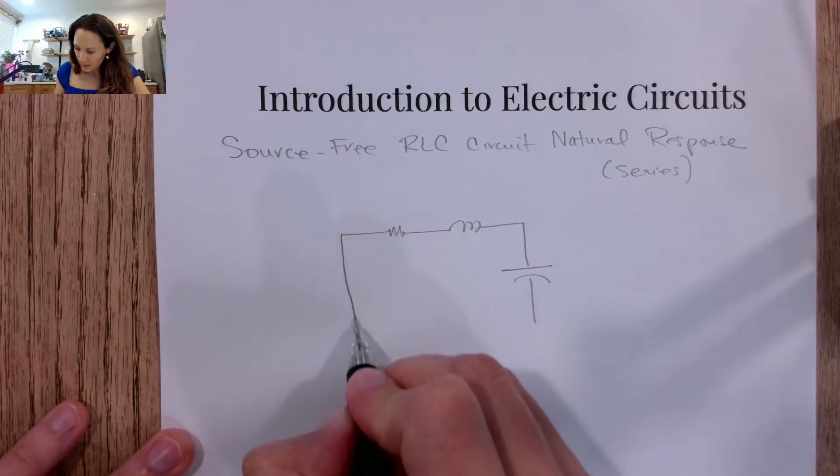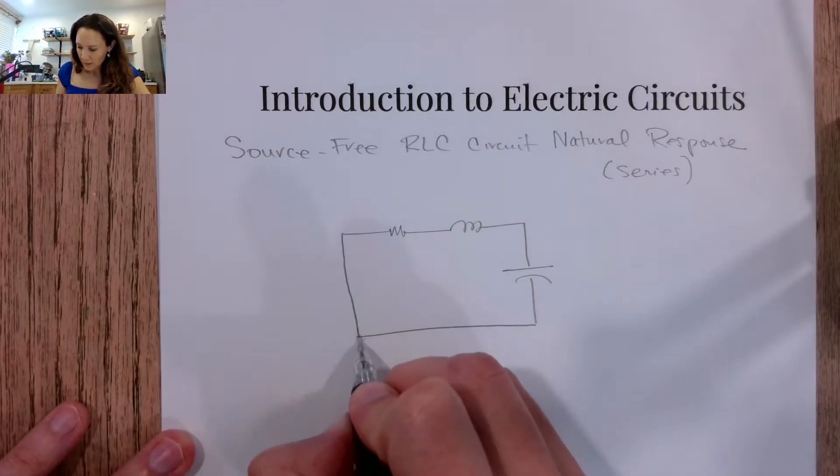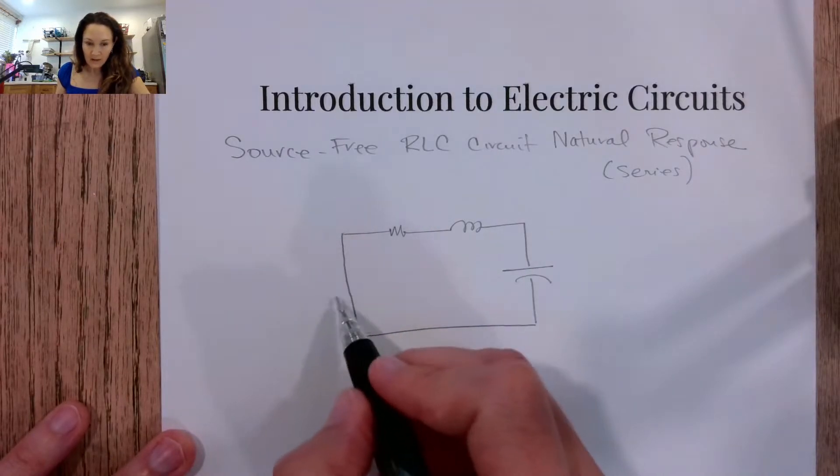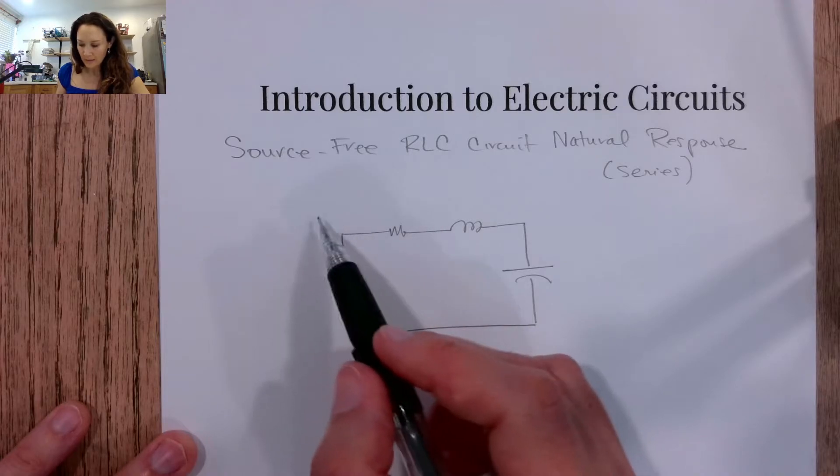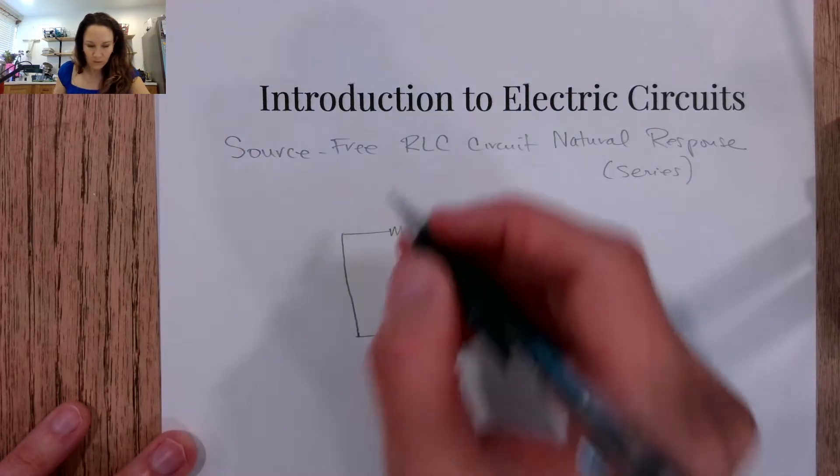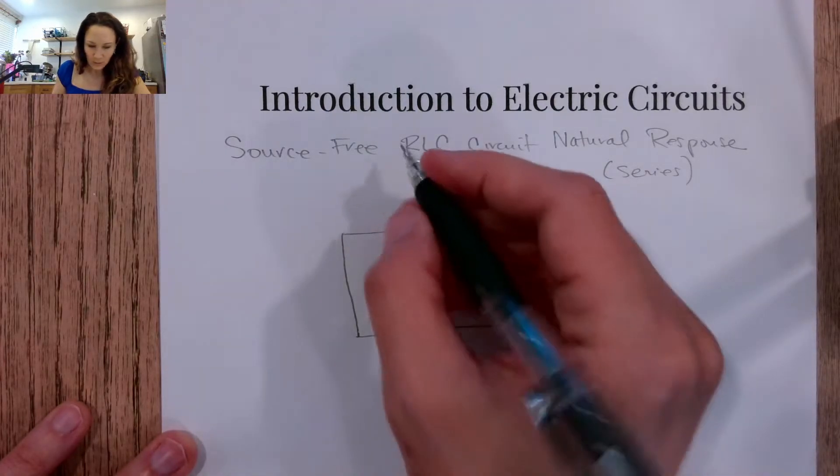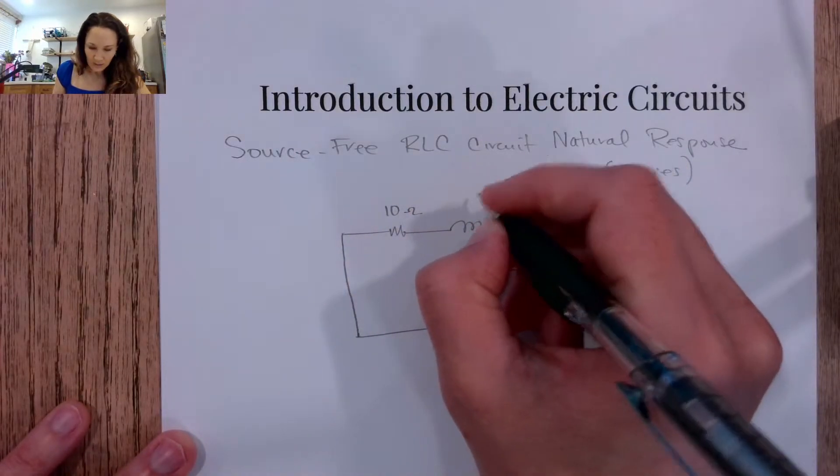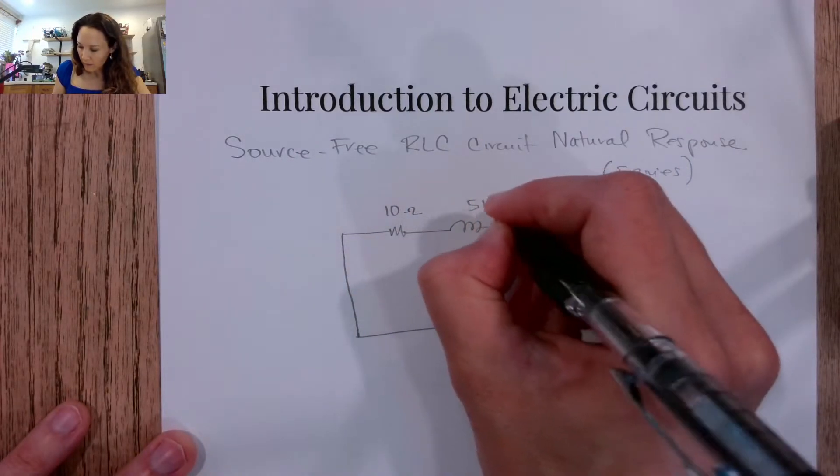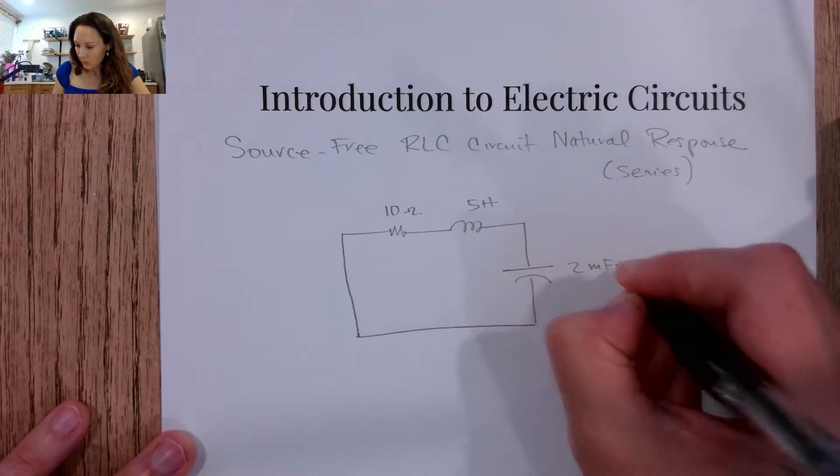So this one is going to be a source-free series RLC circuit. Over here we might have some step voltage that went to zero, or more likely we had a switch that switched away the power source, and we're just left with a source-free circuit. So I'm going to put some values in here to work with. Let's let that be a 10-ohm resistor, a 5-Henry inductor, and suppose this is a 2-microfarad capacitor.